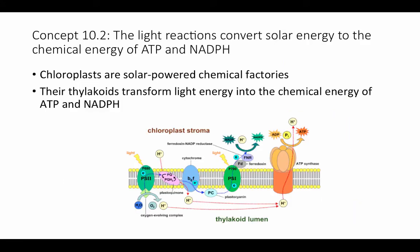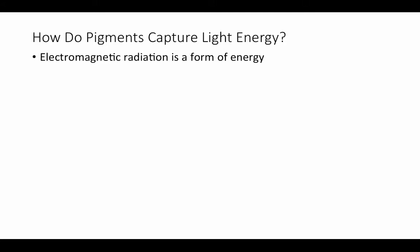The light reactions convert solar energy to the chemical energy of ATP and NADPH — this is where we get the conversion of light to chemical energy in the form of high-energy electrons. Think of chloroplasts as solar power chemical factories: they take the energy from the sun and transform that light energy into the chemical energy of ATP and NADPH. Before we dig into these light-dependent reactions, we need to think about what light is, what it's composed of, and where this energy comes from.